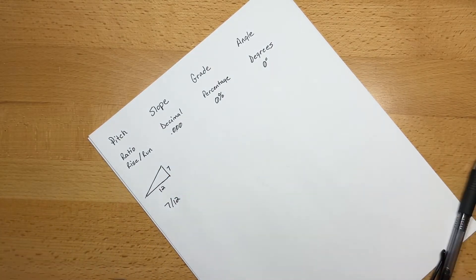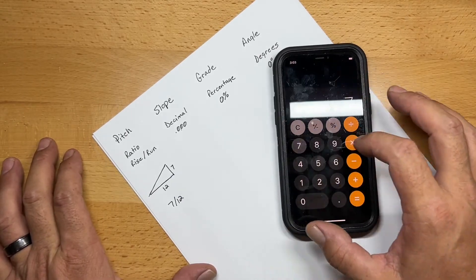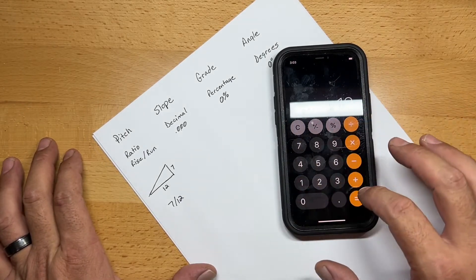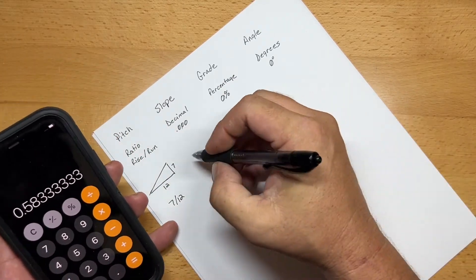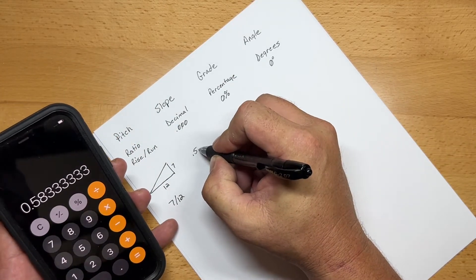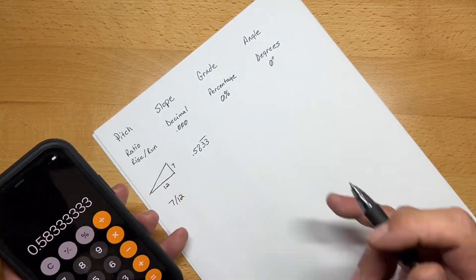Now, slope is just the decimal form of that number. So if we take our calculator and we take 7 and we divide by 12, that will get us 0.583 repeating. So the slope for that pitch is 0.583 repeating.